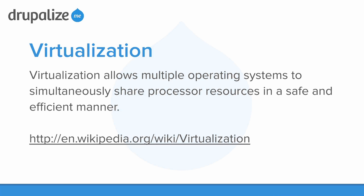Virtualization allows multiple operating systems to simultaneously share processor resources in a safe and efficient manner. The term was originally created for mainframe computers that were going to share different resources or different applications on the same computer. Obviously, we've grown hugely since then in our computing capacity, and we can now put multiple computers onto the same machine.